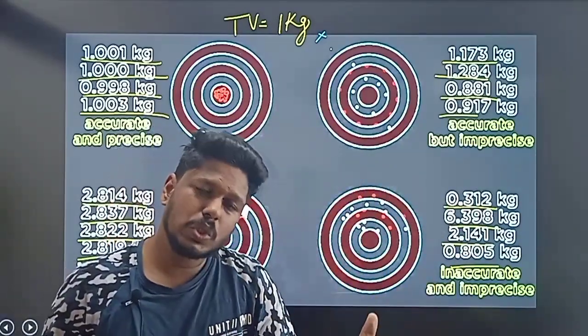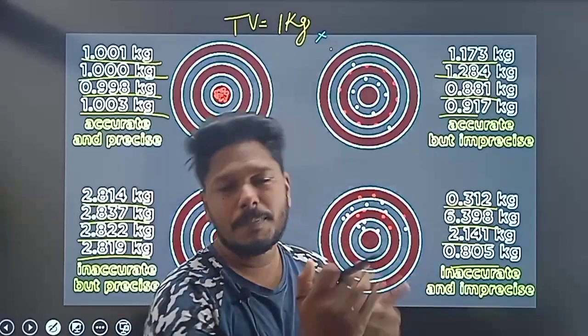Accuracy means true values will be closer to the actual true value. Precision means you have to measure the values at the same single position repeatedly.